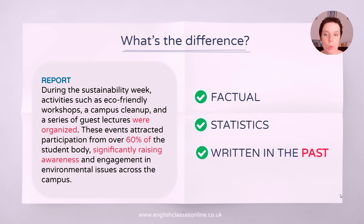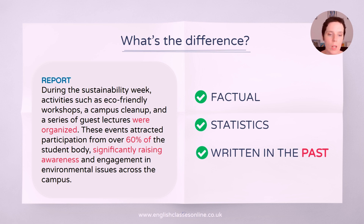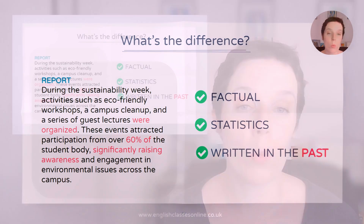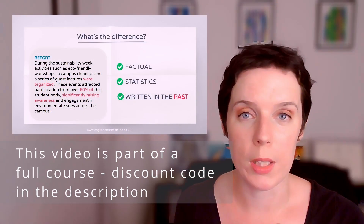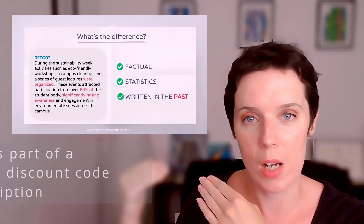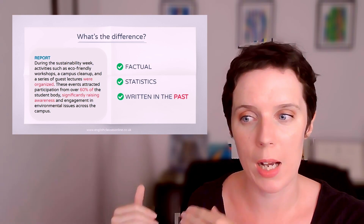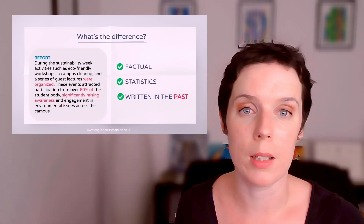So the main difference — your report is factual. It includes statistics. You're recounting an event, or you're reporting what happened at an event, or what happened about a certain problem. What happened is the main thing here, because your report is written in the past. The clue is in the name — you are reporting, so whatever you're reporting on must have already happened. It's past writing, really in the past.